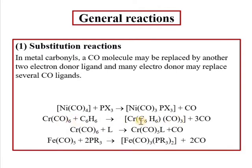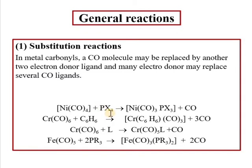You can see that three carbonyls will be replaced if the ligand donates six electrons, or one carbonyl can be replaced if it donates two electrons. So the substitution reaction is based on this — the replacement or substitution will be dependent on the number of electrons donated by the incoming ligand.